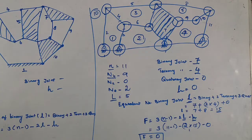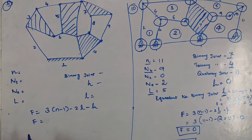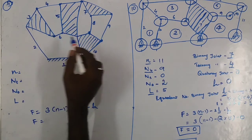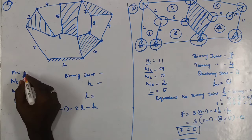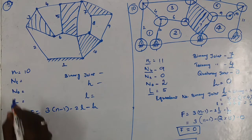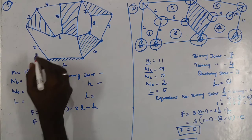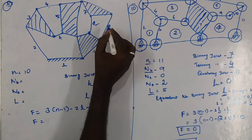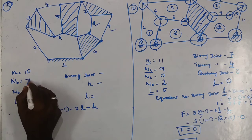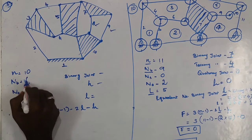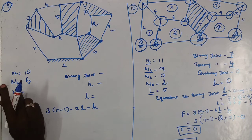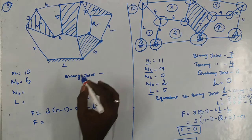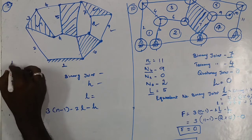Problem 11: Total links n = 10. Binary links: 6. Ternary links: 2. Quaternary links: 2. The mechanism has 4 closed loops. Now identifying joints: binary joints total 13. No ternary or quaternary joints present in the joint count. Equal number of binary joints L = 13.